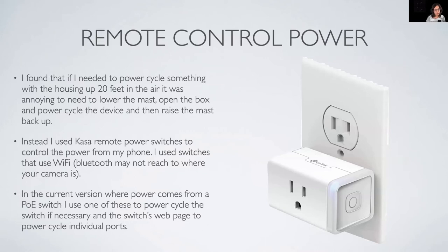There is the question of remote controlling power. Depending on where your all-sky camera is, it might be awkward to go reboot your Pi if it crashes. In my case now I'm using a power over Ethernet switch, so I can go to the switch and disable then re-enable power to reboot the Pi. But if you're using a regular 120-volt power supply, you can use something like CASA remote power switches, which can be controlled through a web app or phone app to turn the power off and back on to your Pi.